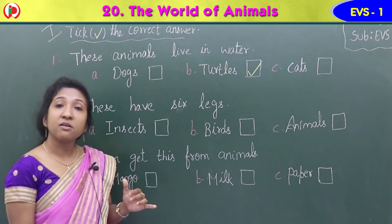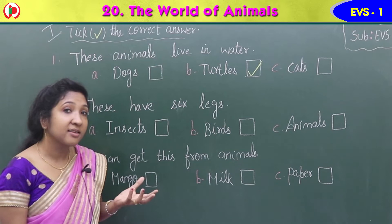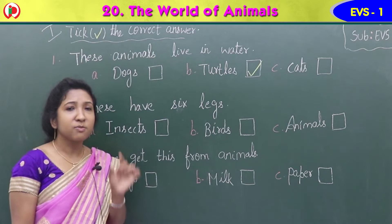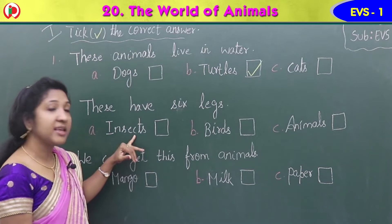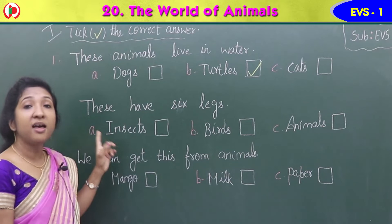Which animals have six legs? We learned about animals that have six legs — they are small and have small wings also. Yes, they are insects, I-N-S-E-C-T-S. Option A is the correct answer.